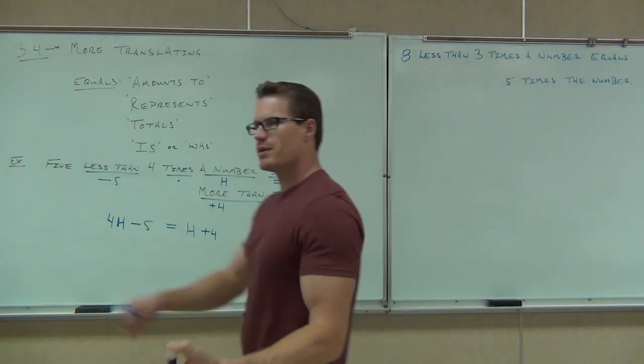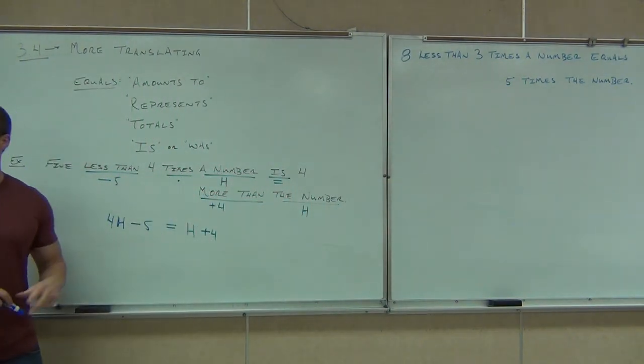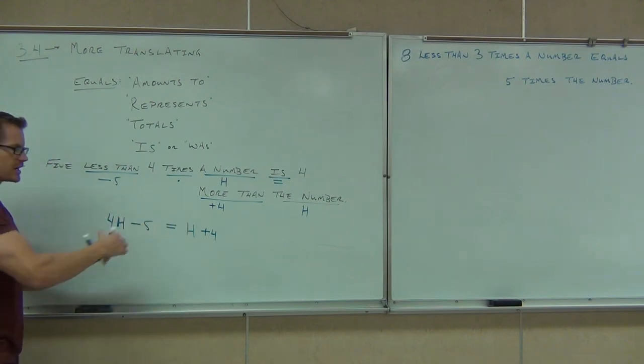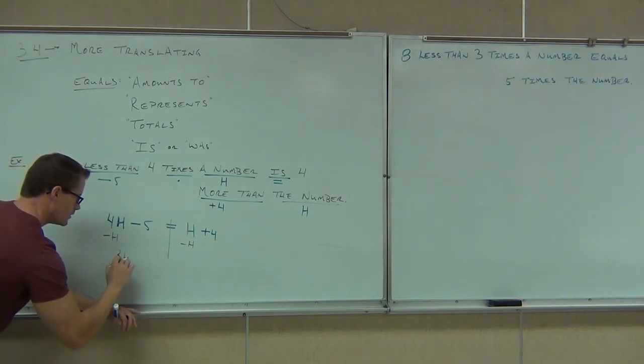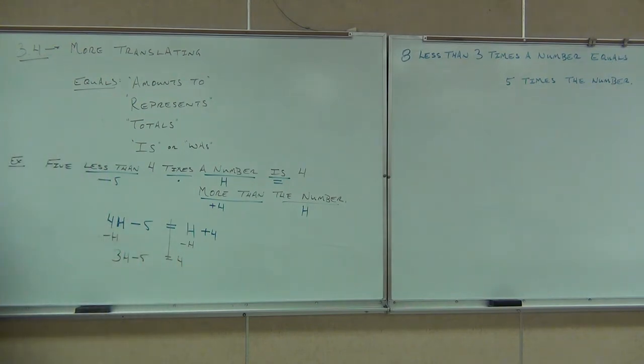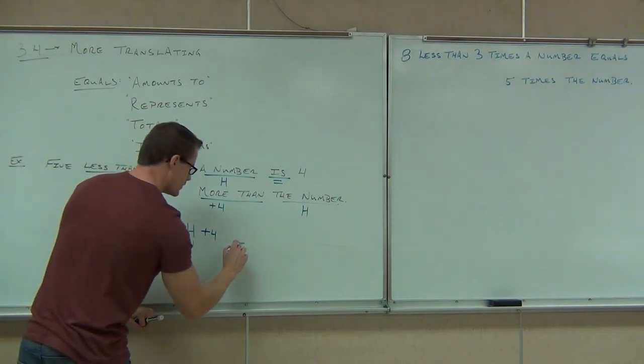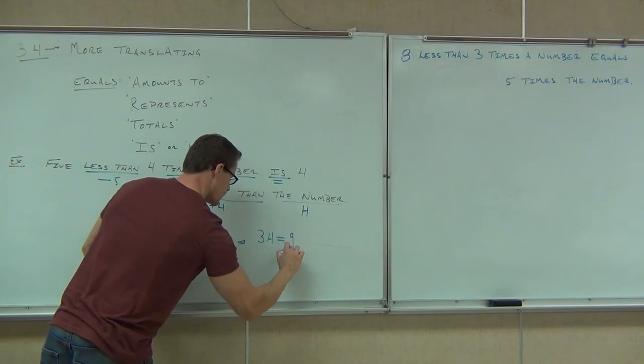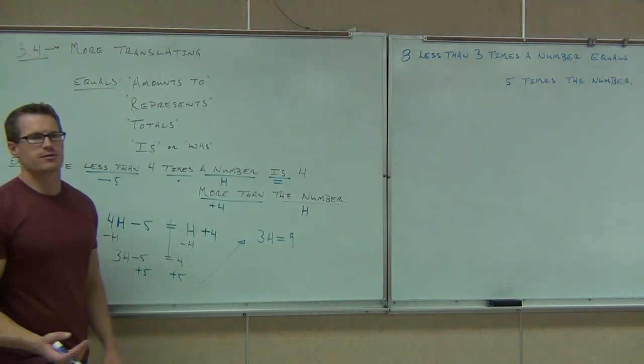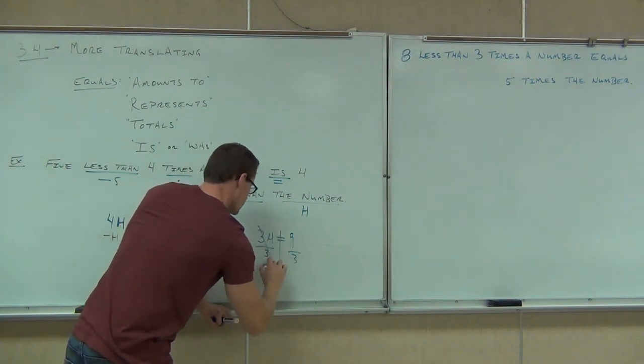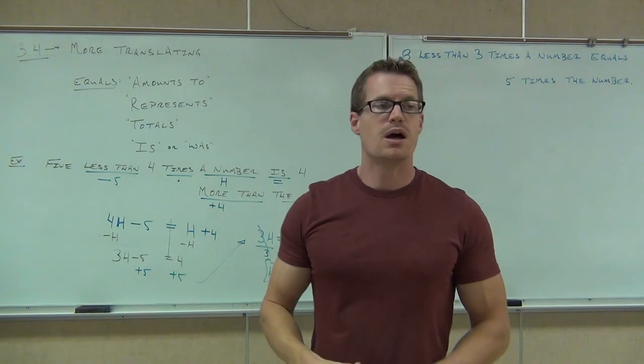So 4H minus 5 equals H plus 4. We know how to solve those now. What's our first step in solving this problem? Good, smaller variable. It's already combined. Smaller variable is H in our case. We'll subtract H from both sides. 3H minus 5 equals 4. And the next step. Good, so constant term. We're getting rid of that. We're going to have 3H equals 9. Our last step is always to divide if we have a coefficient. So we're going to divide by 3 on both sides. H equals 3. Raise your hand if you've got H equals 3.